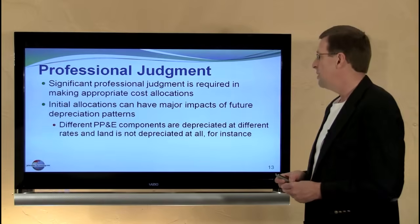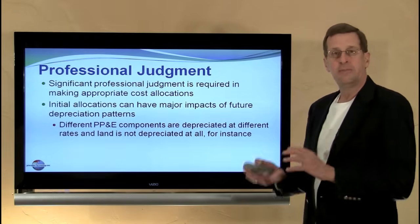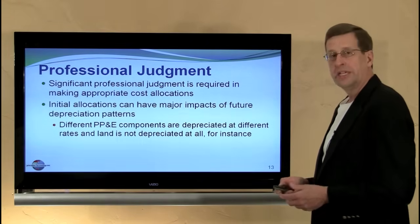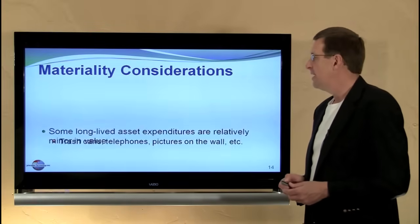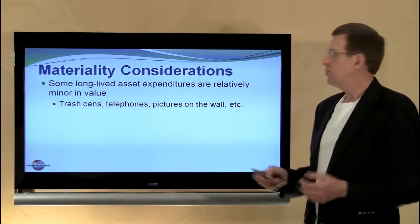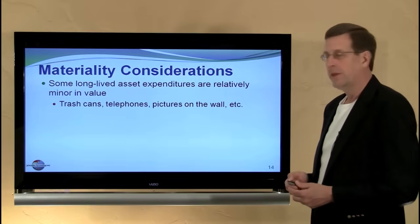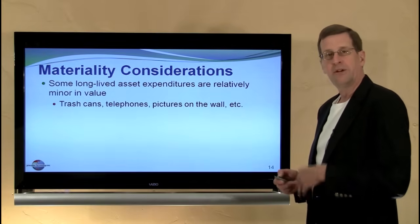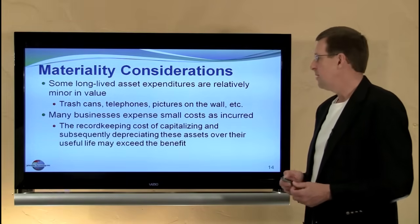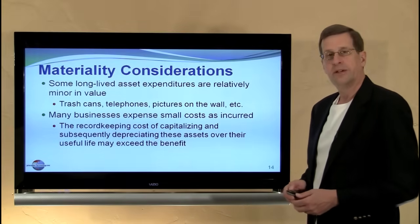The initial allocations do have major impacts on future depreciation patterns. For example, if we had allocated a different amount to land versus buildings, future depreciation expense would differ because land is not depreciable — so it is an important allocation decision. There are also materiality considerations. Some long-lived asset expenditures are relatively minor in value. If we buy a trash can, telephones, or pictures for the wall, it may not be worth the cost to capitalize those items. Many businesses expense small costs immediately, as the record-keeping cost of capitalizing and depreciating these assets over their useful life can exceed the benefit of doing so.